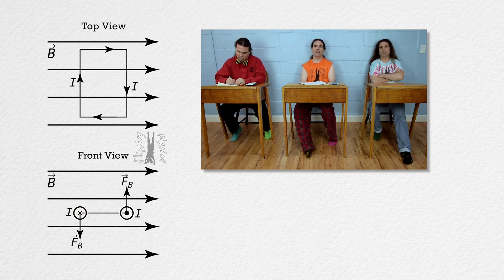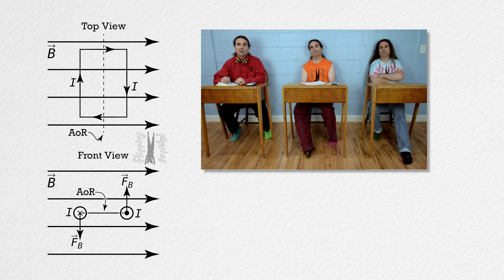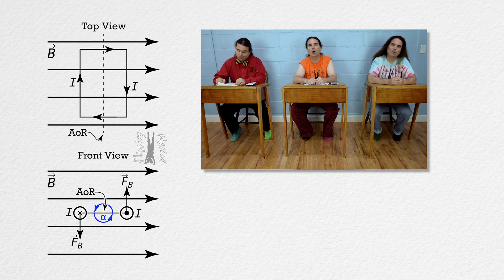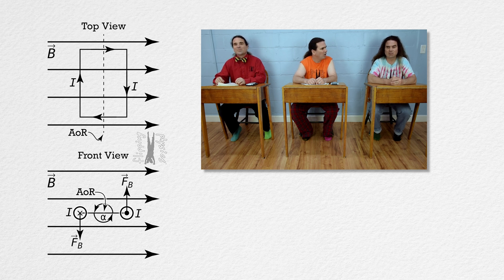There is a net torque acting on the loop from the current passing through the wires in the uniform magnetic field. Exactly. And let's add an insulated hinge in the middle of the rectangular loop which allows the current-carrying loop to rotate around that axis of rotation. You can see I have added that axis of rotation in the top view and in the front view, and I have shown that the wire loop will angularly accelerate in the counterclockwise direction in the front view.